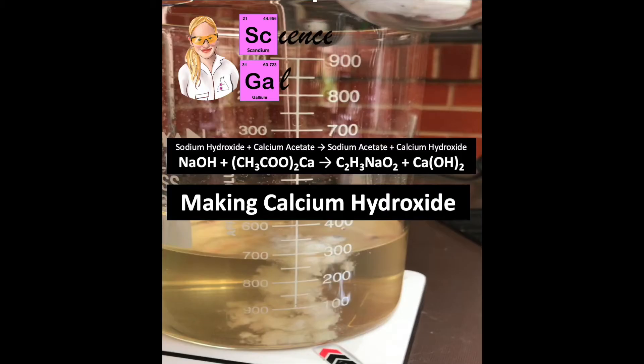In this experiment we are going to be making some calcium hydroxide by doing a double displacement reaction by adding two reactants, calcium acetate and sodium hydroxide, that will produce the two products calcium hydroxide and sodium acetate.